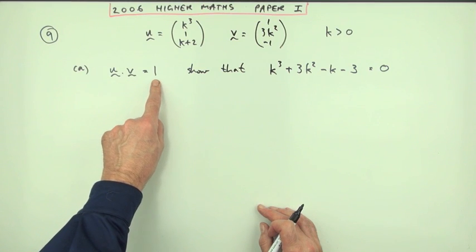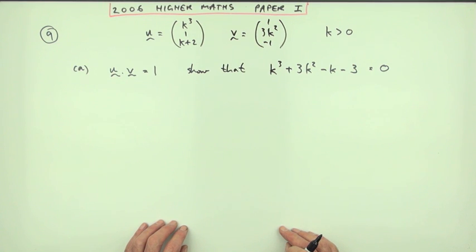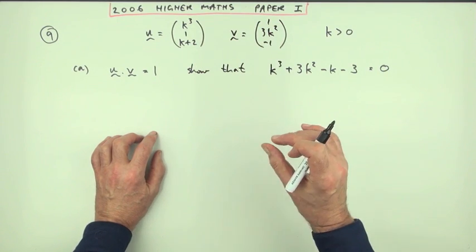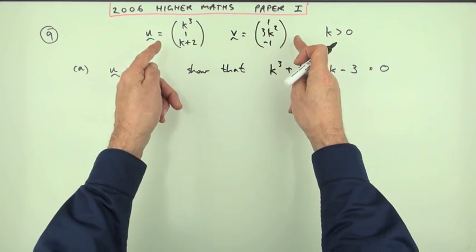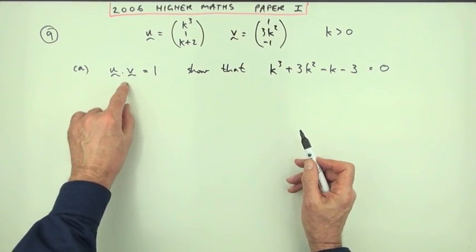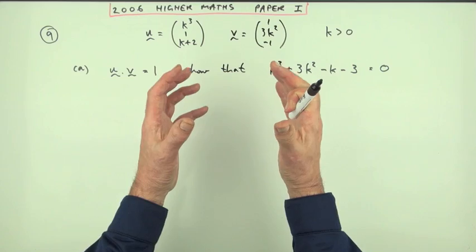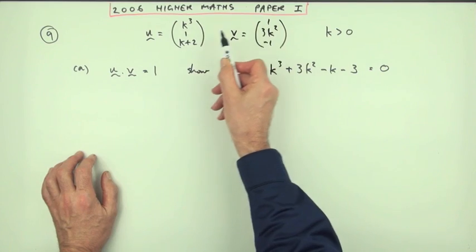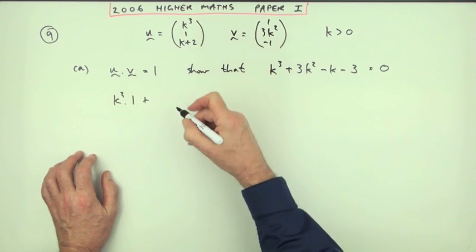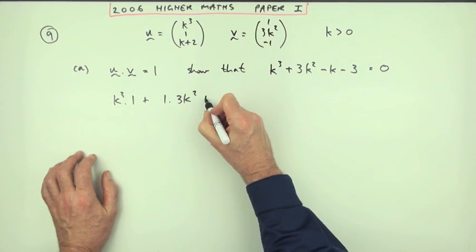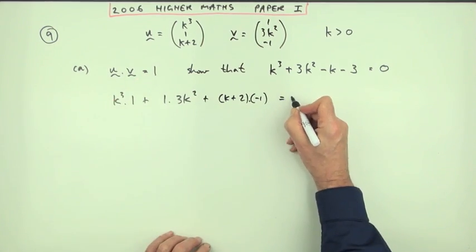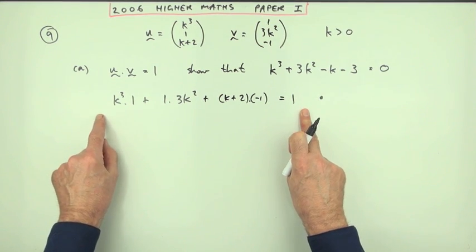That just means: do you know how to find the scalar product? It's a product, so there's a multiplication involved. It's a scalar product, which means the answer isn't a vector. With the scalar product you do the multiplications but add them up to form a single number. So what is the scalar product? Multiply the corresponding components: k³ times 1, plus 1 times 3k², plus (k+2) times negative one. This should equal one.